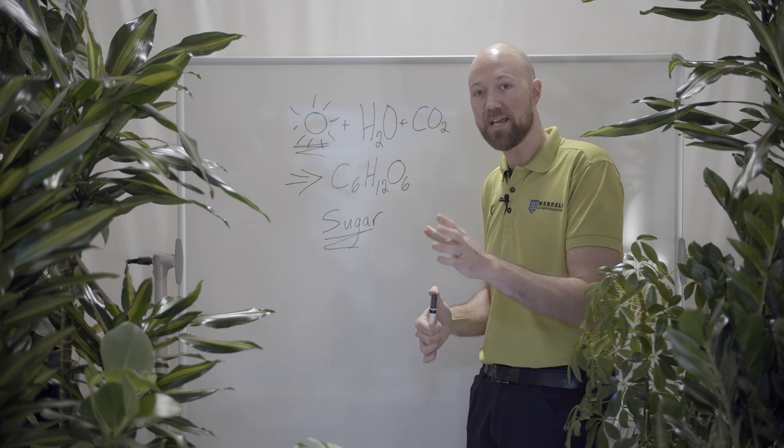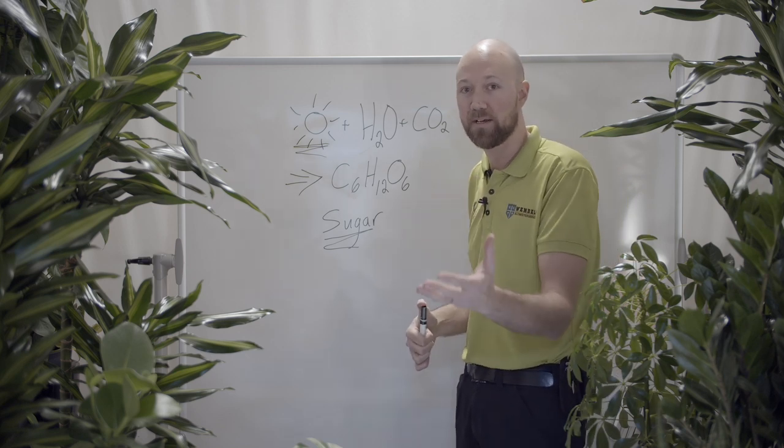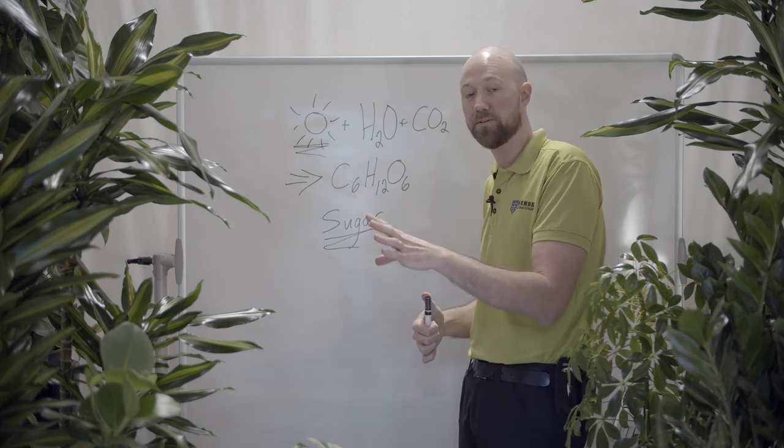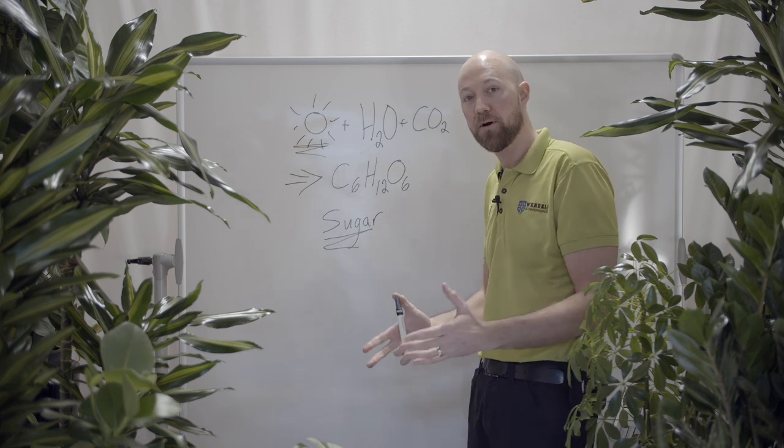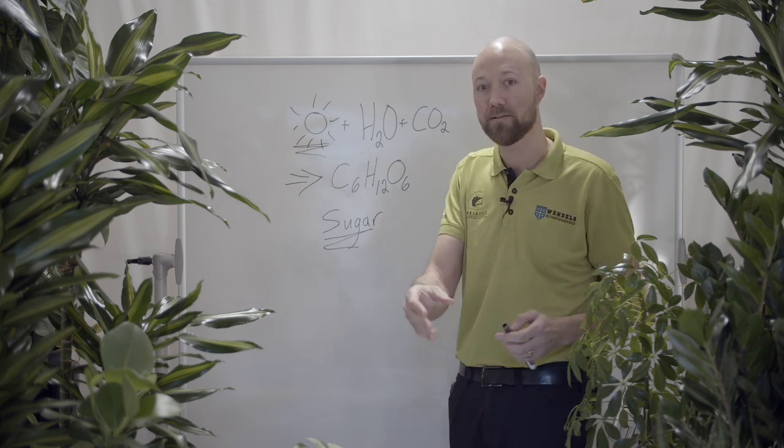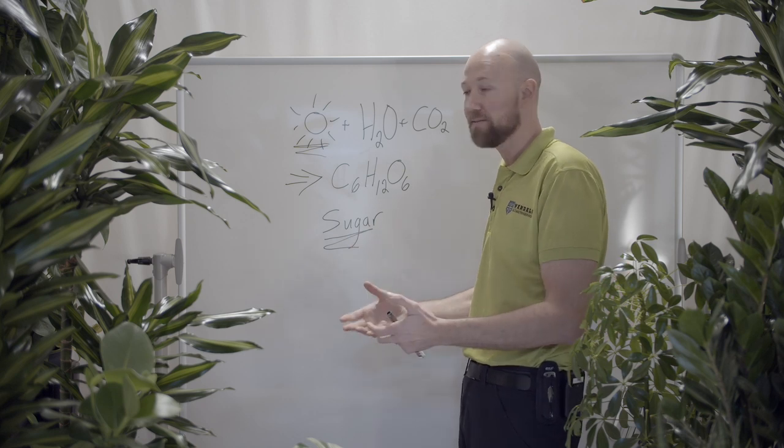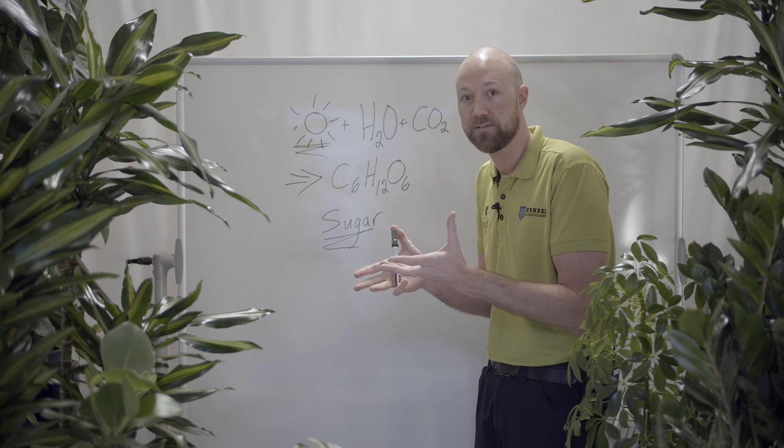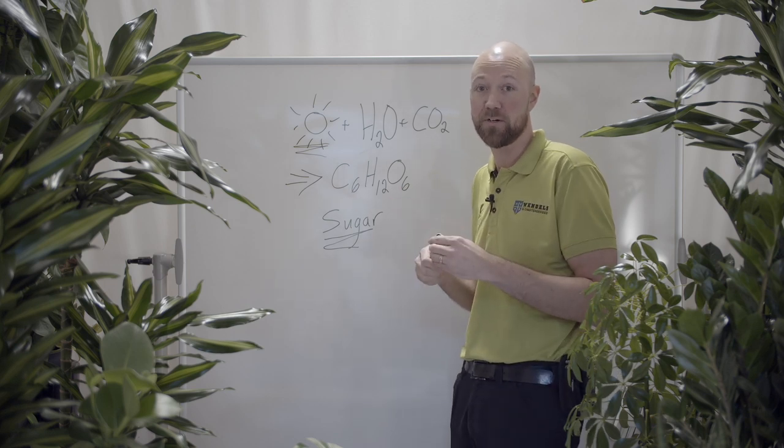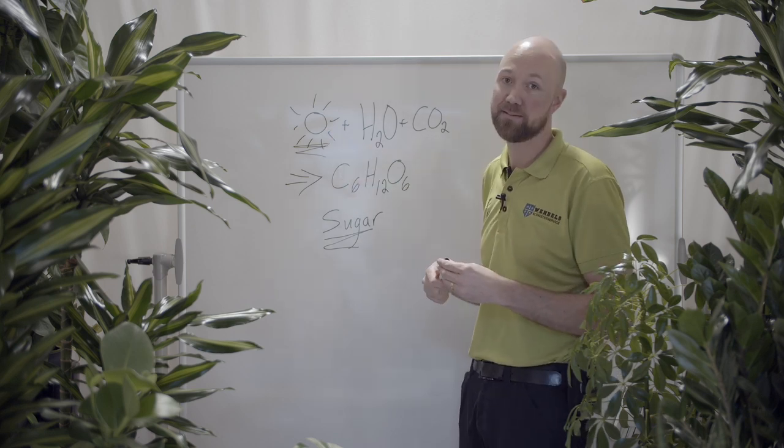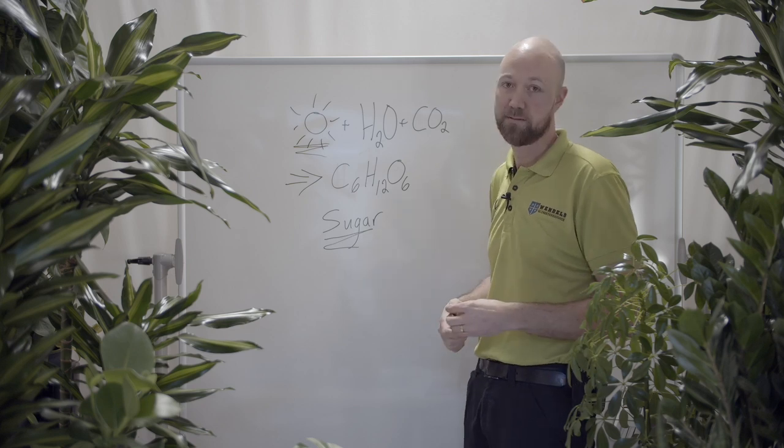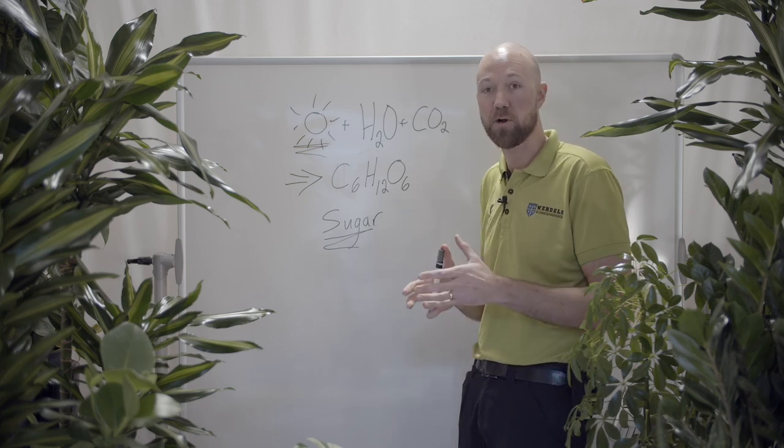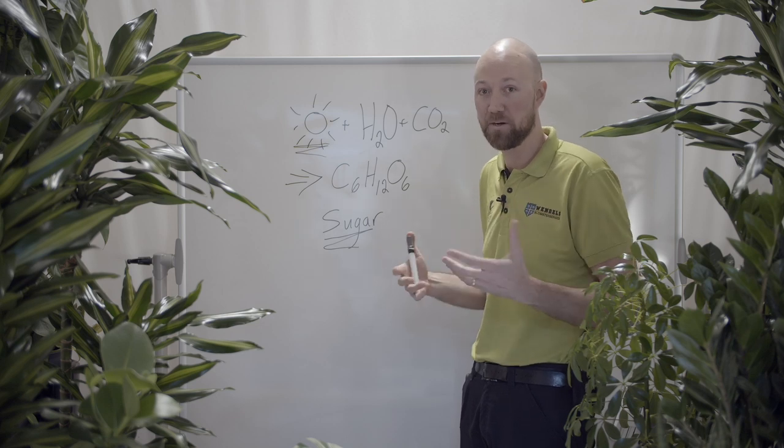Now that doesn't mean add more direct sunlight, because you can burn a plant. But if you move a plant so that it gets a little bit more light than it got before, that is one way to trigger, because the photosynthesis will work easier. So, more light, you will get more sugar and your plant will start to grow and it will become bigger.